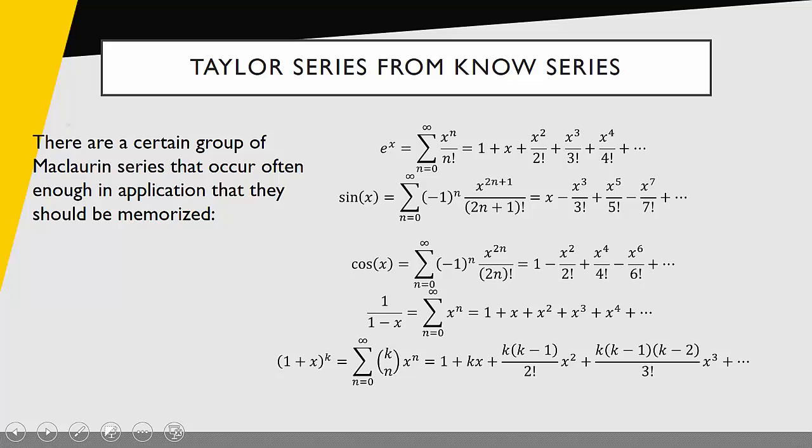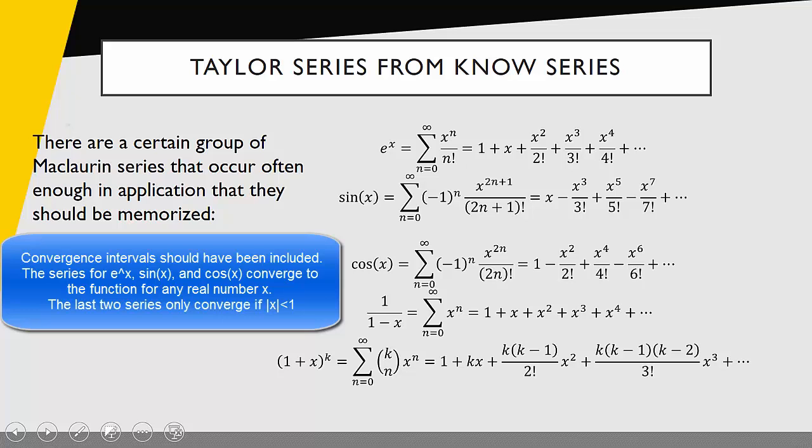Before actually applying this, we have to know several Taylor series. This is a group of Maclaurin series, Taylor series centered at zero, that occur often enough that we need to have these memorized. These are five Maclaurin series that you have to have memorized. I would encourage you, if you haven't already, to pause the video now and write these down and then take some time later to commit them to memory.